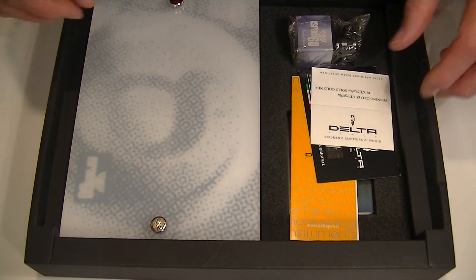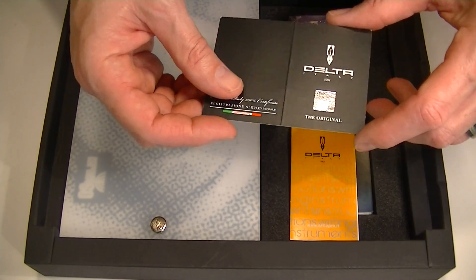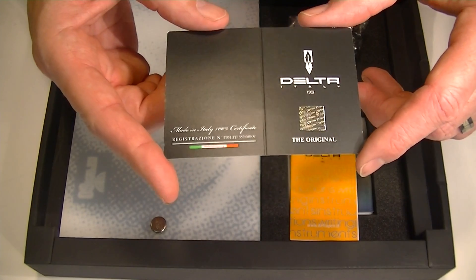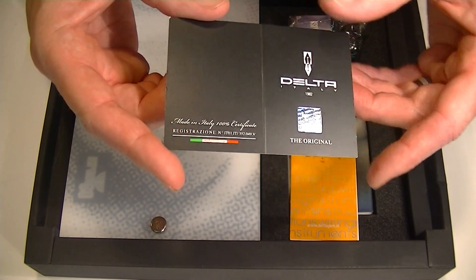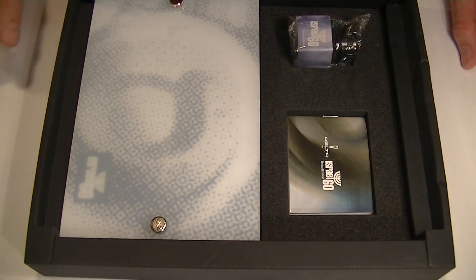The box top simply slides off. Included with the pen, we have informational instructions about the pen, a hologram certificate of authenticity, as well as information about Delta and the use and care guide for the pen.